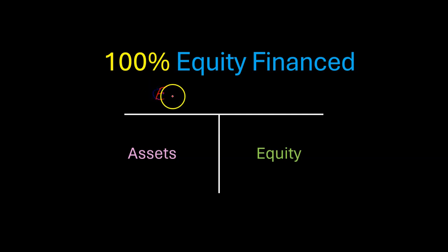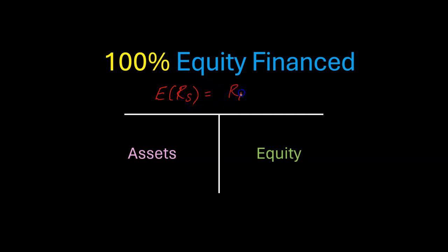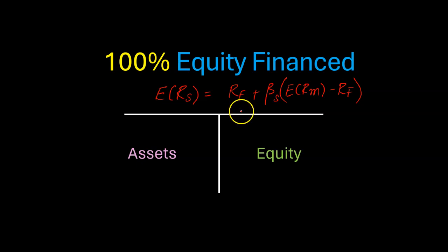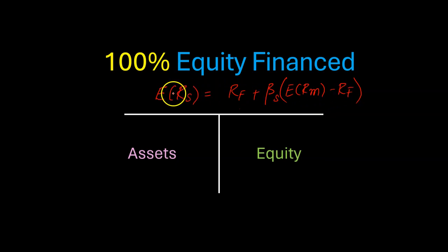To calculate that cost of equity, you can use the capital asset pricing model — the rate of return that equity holders require is equal to the risk-free rate plus the equity beta multiplied by the expected market risk premium. So if we know what the risk-free rate is, if we know what the equity beta is, and if we know what the expected market risk premium is, then we can calculate the cost of equity and hence the cost of capital.